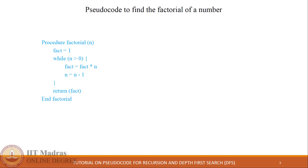While n is greater than 0, we execute two instructions: factorial equals factorial multiplied by n, and n equals n minus 1. This pseudocode computes the factorial of input value n and returns the result.